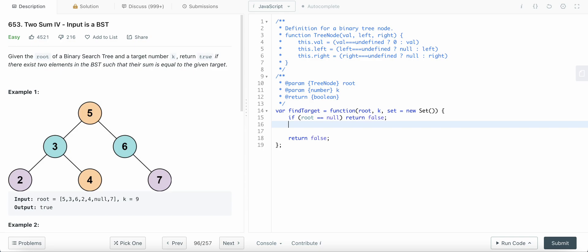So if set has k minus root value, return true. We found our complement and hence we are just gonna return true. If not, then we add our root to the set and then we check to the left.